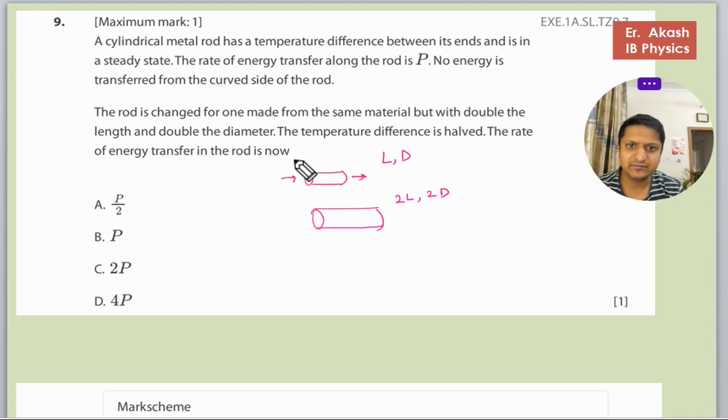The rate at which the energy was moving was P. So delta Q by delta T equals K A delta T by delta X. This is the formula that we have.